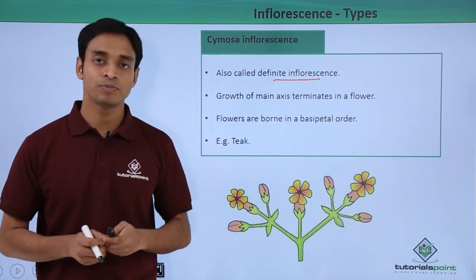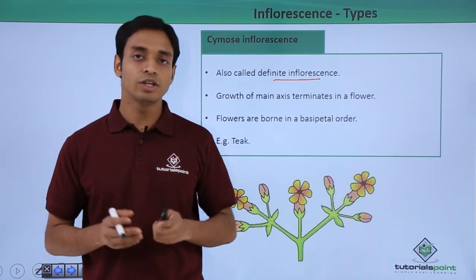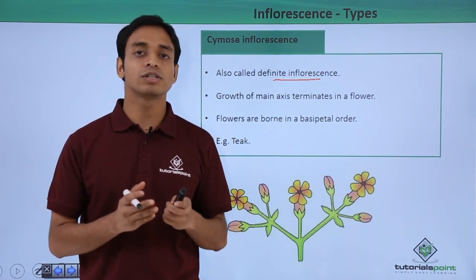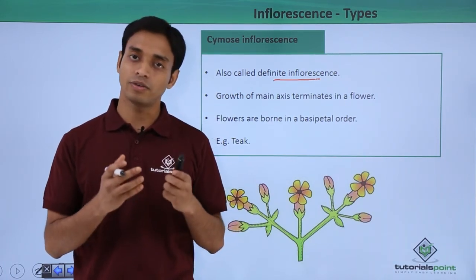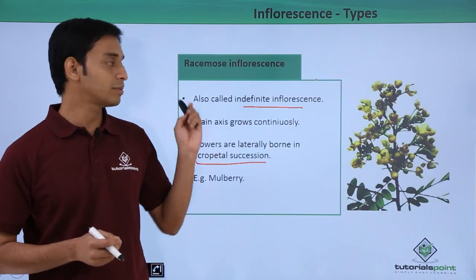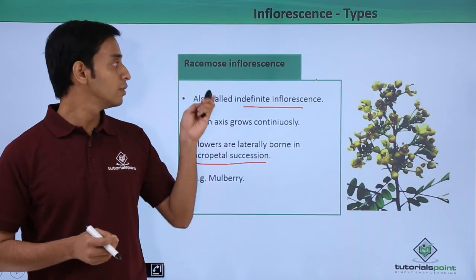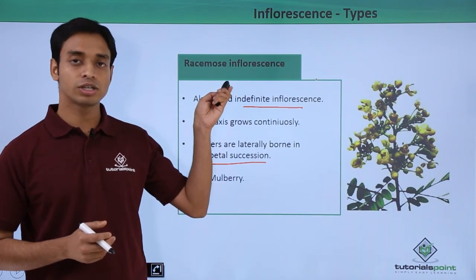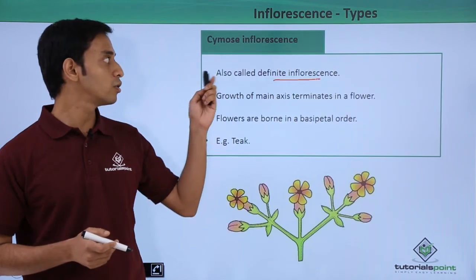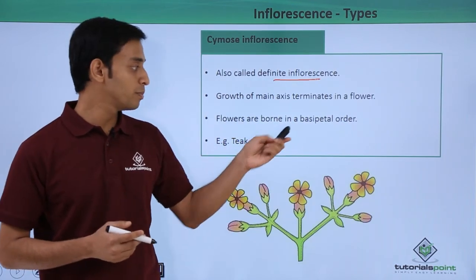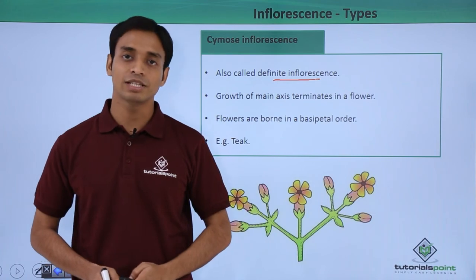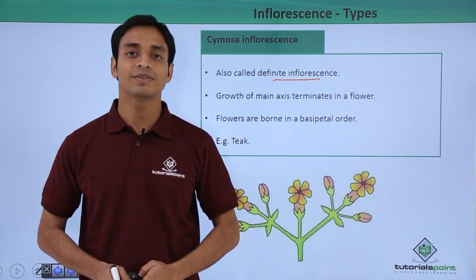Cymose inflorescence is found in plants like teak. In this video we have talked about inflorescence — the arrangement of flowers on the floral axis or the peduncle — and discussed two types: racimose inflorescence, which follows acropetal succession, and cymose inflorescence, which follows basipetal succession. I hope you have understood. Please like this video, thank you.